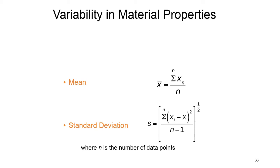The minimum number of samples required is defined by different standards. For example, ASTM requires at least three proper samples to provide an approximate value of elastic modulus and other mechanical properties.